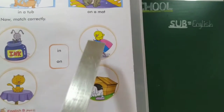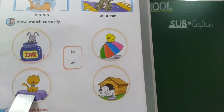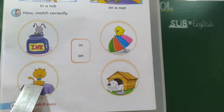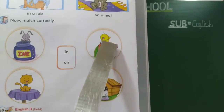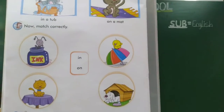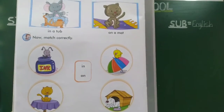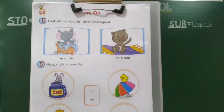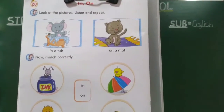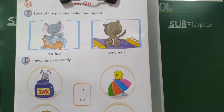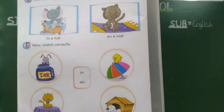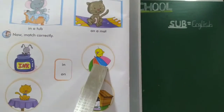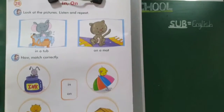Cat aani bird — he kaya hai? Doni vastu cha varthi basla hai. Cat table varthi and bird umbrella varthi. Muna pan kai use karna 'on' and 'on'. In manje vastu cha aatma day, on manje vastu cha varthi. In manje aat, on manje varthi. Okay, got it you all?